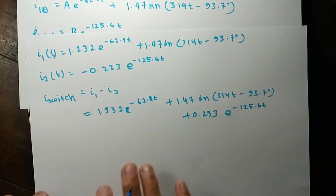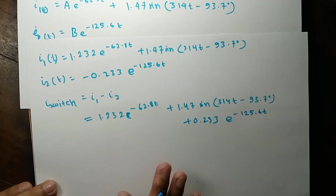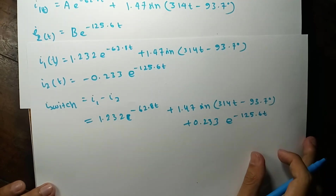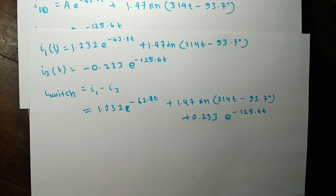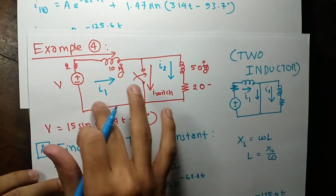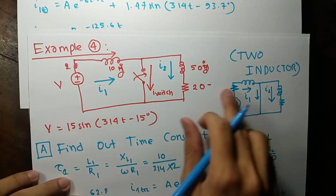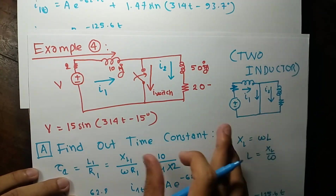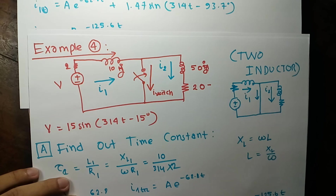That is the complete solution of the current going through the switch. So if you see two inductors, try to find a way that lets you solve the equation for only one inductor at a time, just like in this example. That will be all for example number 4.